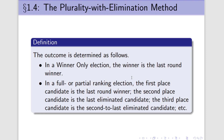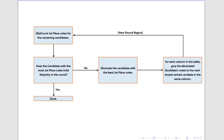The person who got eliminated in the previous round is going to be the third place candidate. The person who got eliminated two rounds prior is going to be the fourth place candidate, and so on and so forth. And if that sounds a little complicated, here's the flowchart which describes it.